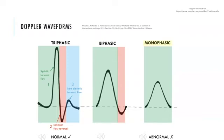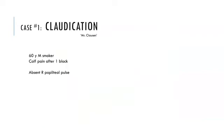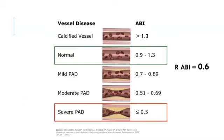Back to our case. When you placed the Doppler probe over his right popliteal artery, the signal sounded monophasic, which is abnormal and often indicates severe disease. You measure his right ABI to be 0.6. Is this what you would expect in a patient with claudication? Yes — claudication range is 0.5 to 0.9.